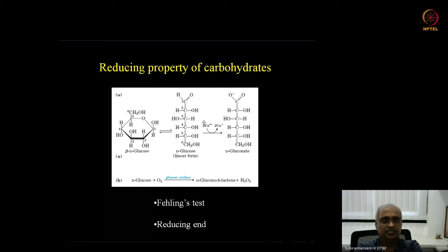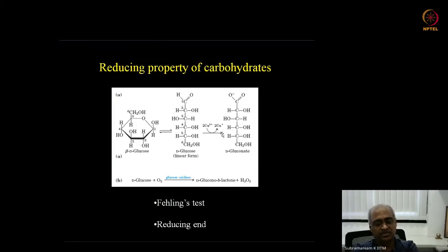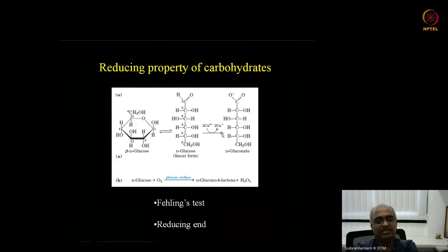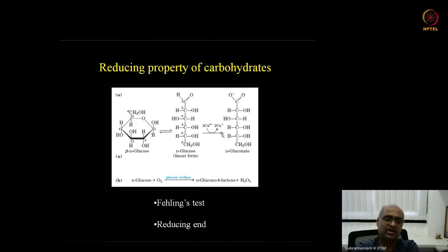This reducing ability is the basis for Fehling's test, where cupric ion becomes cuprous ion and in alkaline conditions forms a reddish precipitate. This test was historically used to detect glucose in blood and urine for diabetes diagnosis — when the solution is greenish the level is acceptable, but a reddish-brown color indicates high sugar.